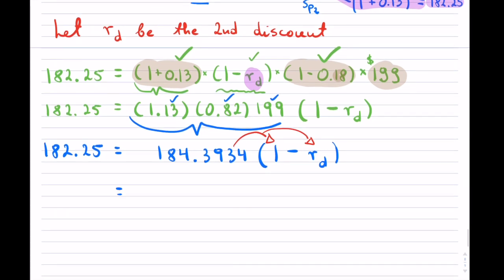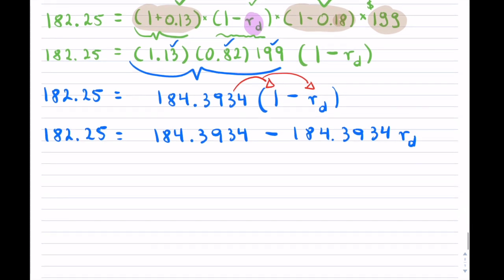So let me do the distribution. Now, if I distribute, I'm just multiplying by one. So I can just rewrite this minus 184.3934 times Rd and my left hand side here. So now it's much simpler. I can now solve for Rd.